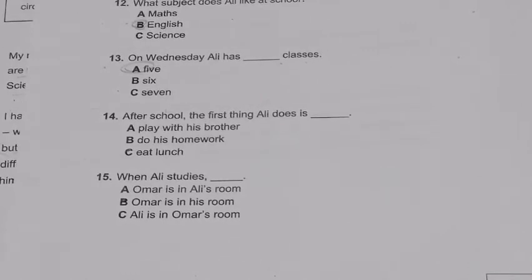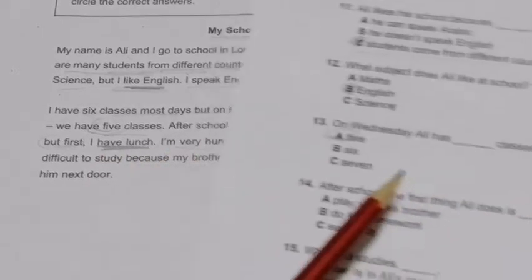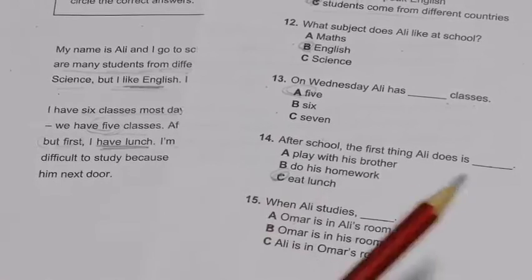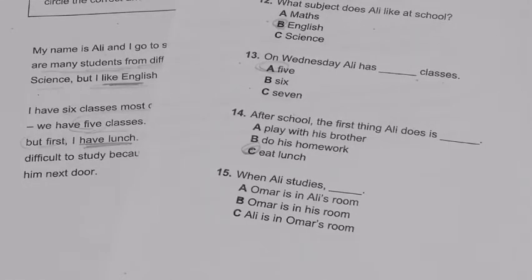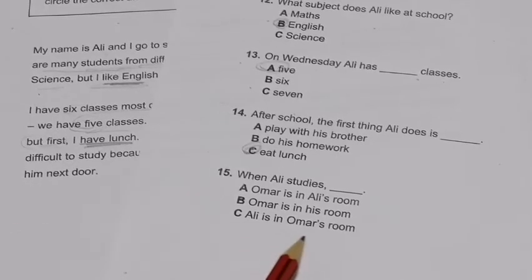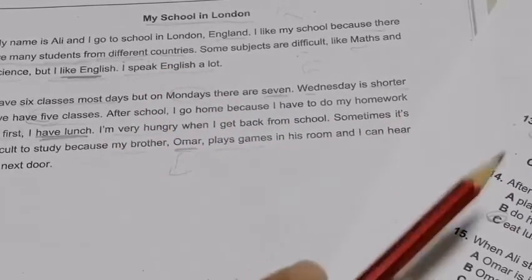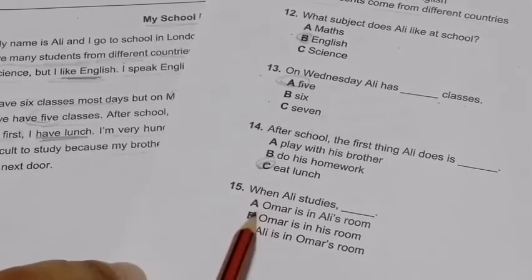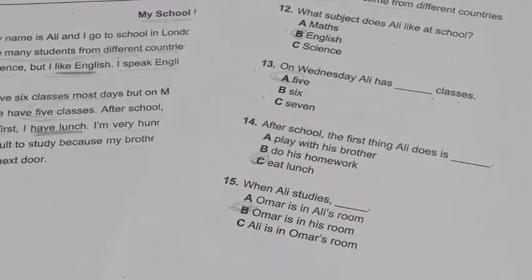Question 14: After school, what is the first thing Ali does — play with his brother, do his homework, or eat lunch? From the text: 'First I have lunch.' So the answer is eat lunch. Question 15: When Ali studies, where is Omar? Omar is in his own room. The answer is: Omar is in his room. That's the end of Part 2 — you can get five out of five.